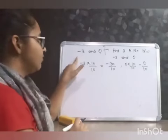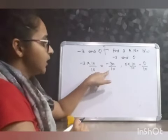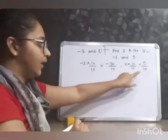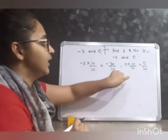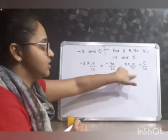Now, your rational numbers become minus 30 by 10 and 0 by 10. Now, you can easily find any three rational numbers between these. How?